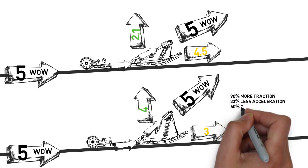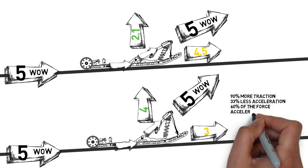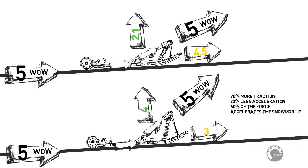So the steeper angle of the front arm shown in the second configuration gives almost twice the lift on the chassis and almost double the traction of the flatter angle, but with 33% less force for acceleration.